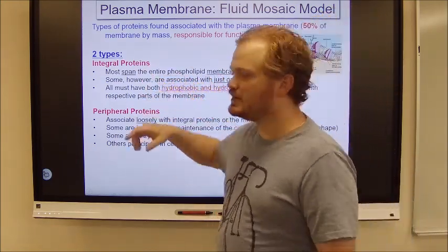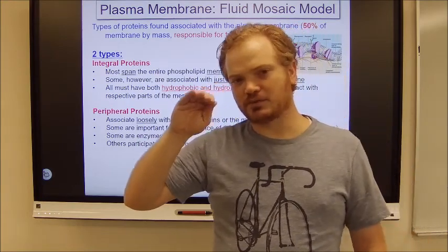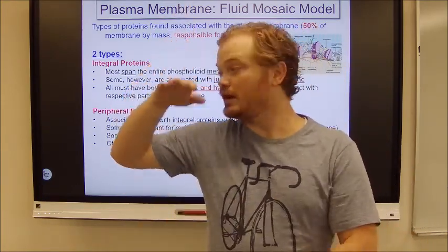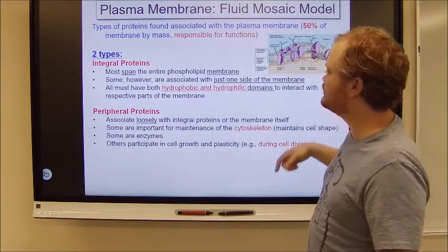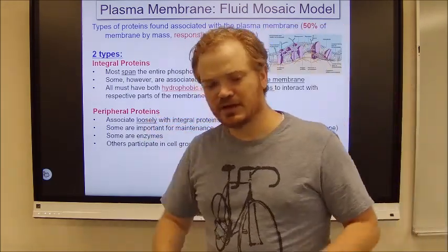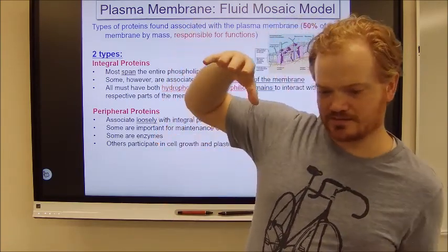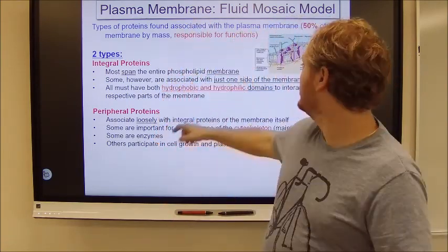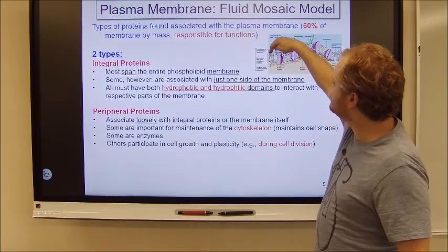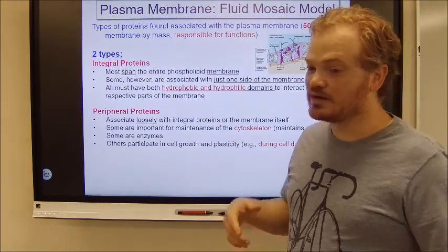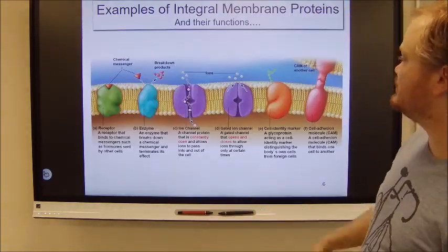Now, the integral proteins are those which span the entire length of the membrane. So they go from the outside of the cell to the inside of the cell. They go all the way through the center. Peripheral proteins are typically associated with either the outside of the membrane or the inside of the membrane. They aren't through the middle. They'll be connected to part of the membrane, either on the outside or the inside, one or the other.